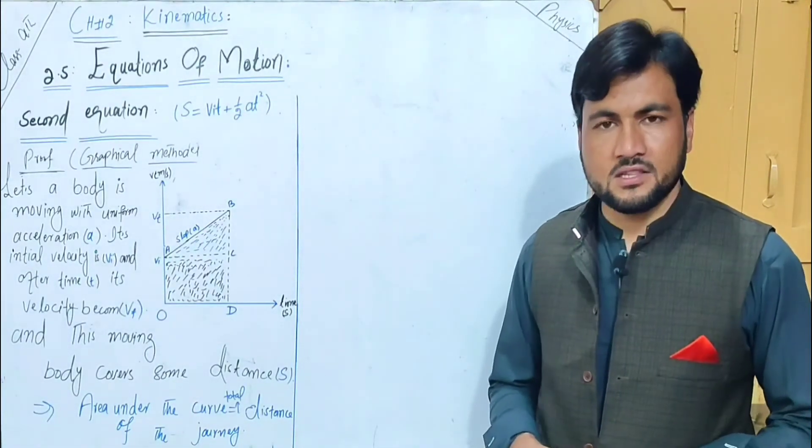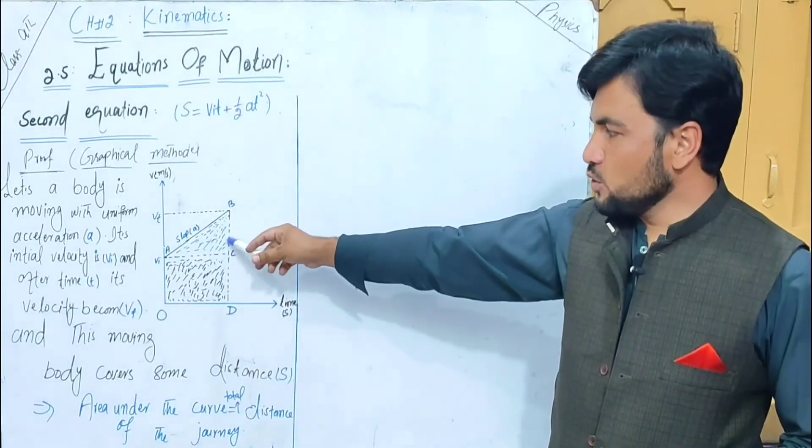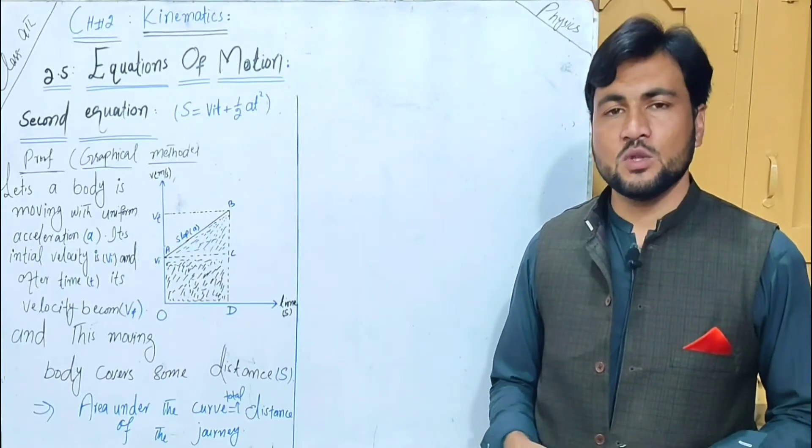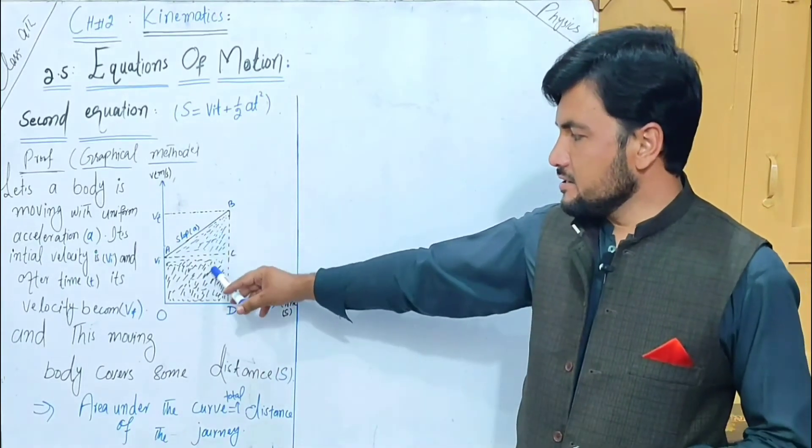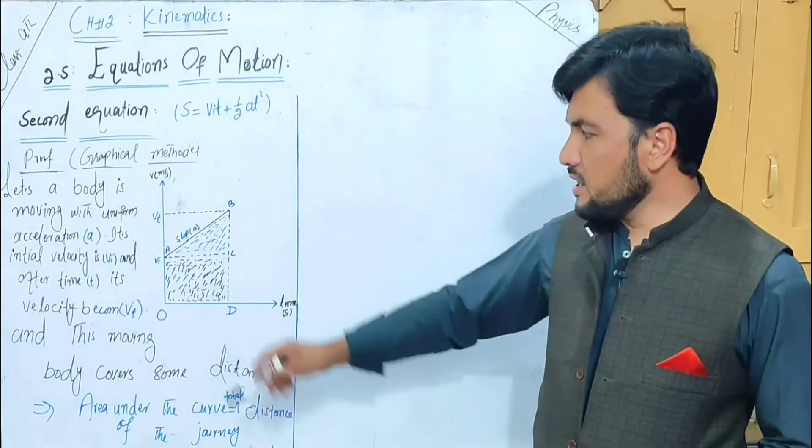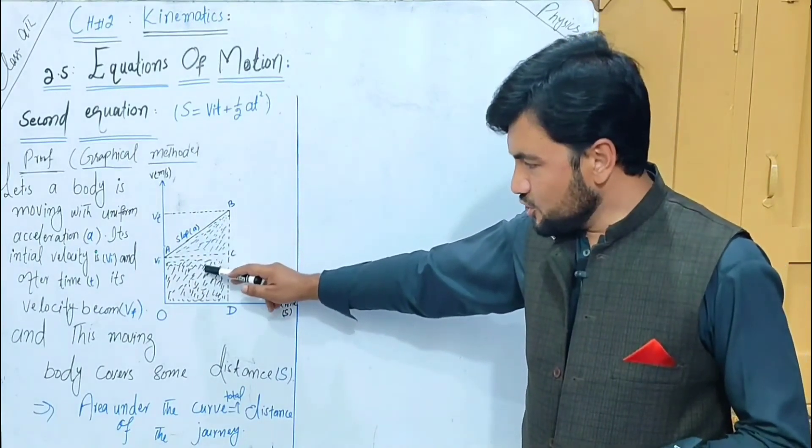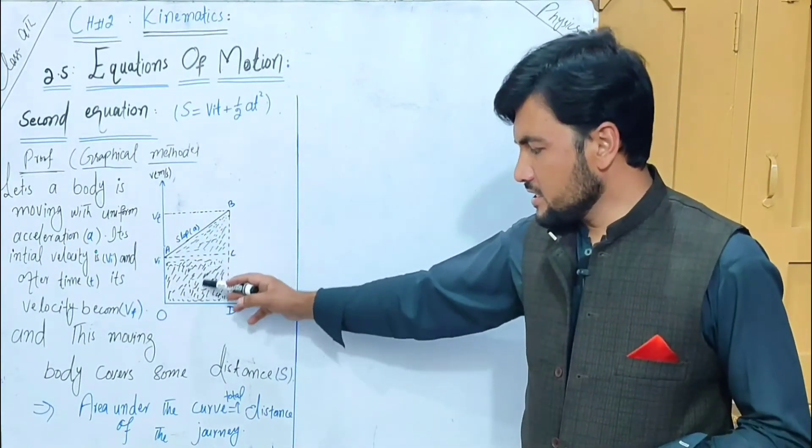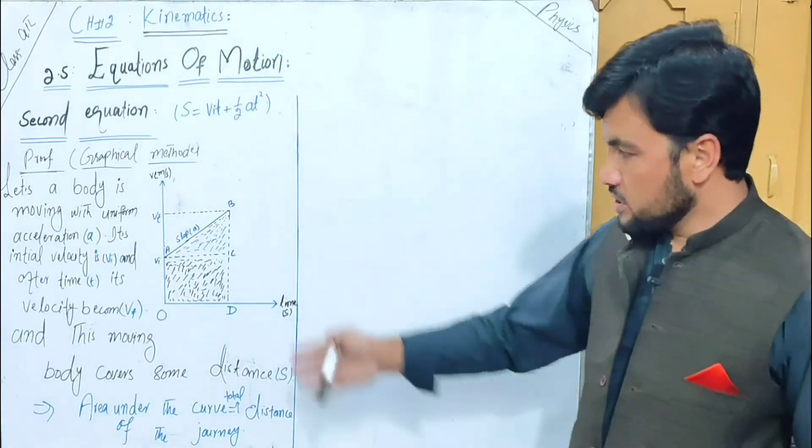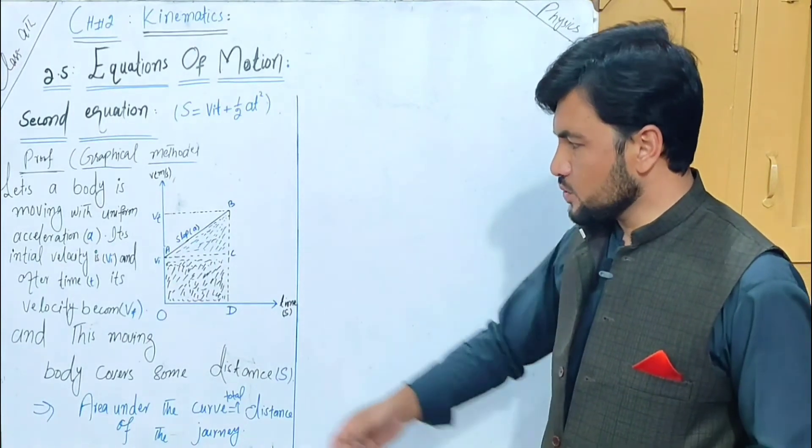The velocity-time graph, its slope gives the acceleration. The area under the curve gives the total distance of the journey. The area under the curve represents the total distance of the journey.